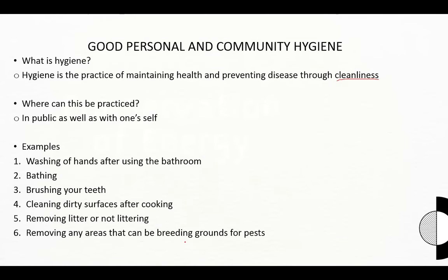Littering creates breeding grounds for pests. For example, mosquitoes lay their eggs in clean stagnant water found in plastic or glass bottles left as litter. That stagnant water becomes a breeding site that affects people in the community — even if you've already left the area. So remove your garbage when you leave.